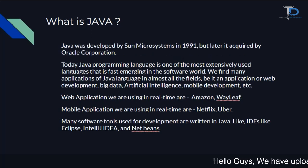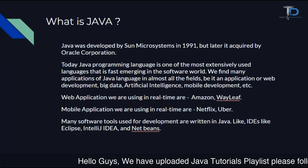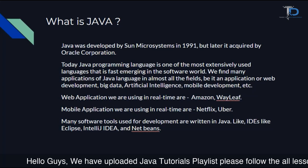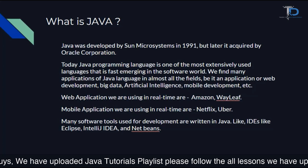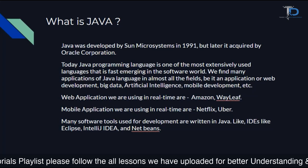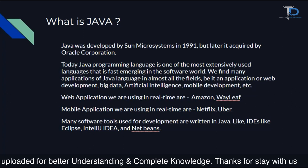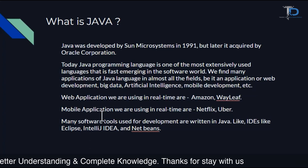Java was developed by Sun Microsystems in 1991, but later it was acquired by the Oracle Corporation. The names of the persons who developed Java are James Gosling and Patrick Naughton.